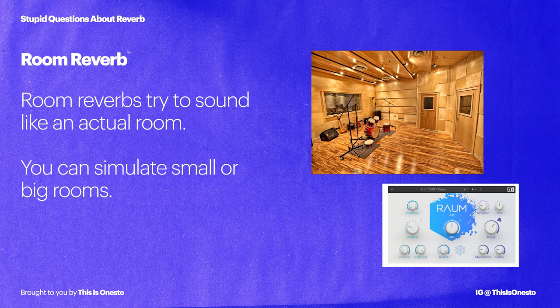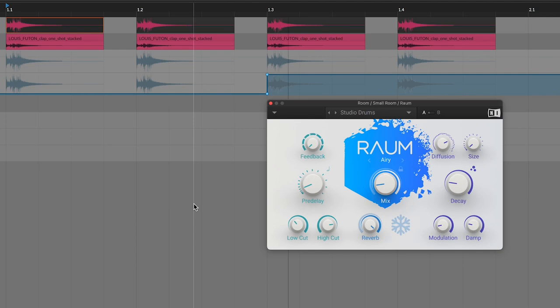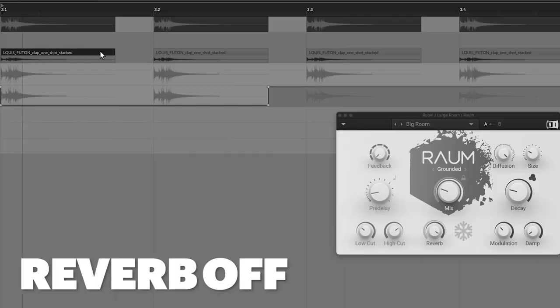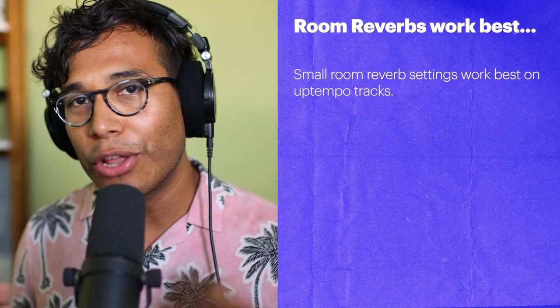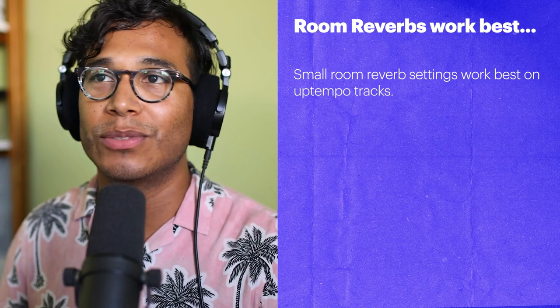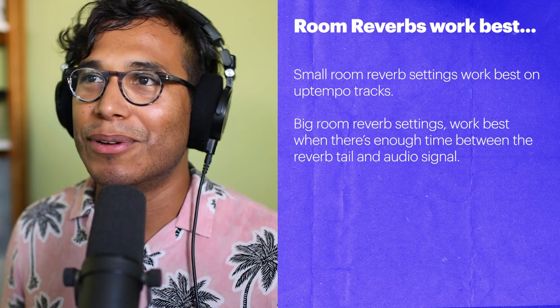Let's start off with room reverb. It's designed to sound like a sound is being placed in an actual room. Room reverbs are trying their best to sound like they're coming from a real life space. With it, you can simulate a sound placed in a small room or a much bigger room. Smaller rooms tend to sound better on up-tempo songs, while bigger rooms — because of their longer reverb tails — sound better on slower tempo songs.